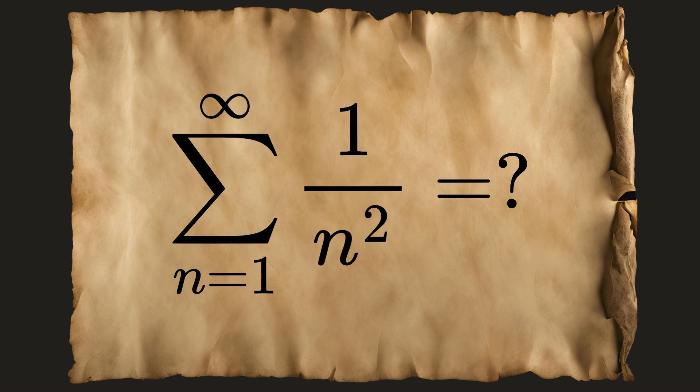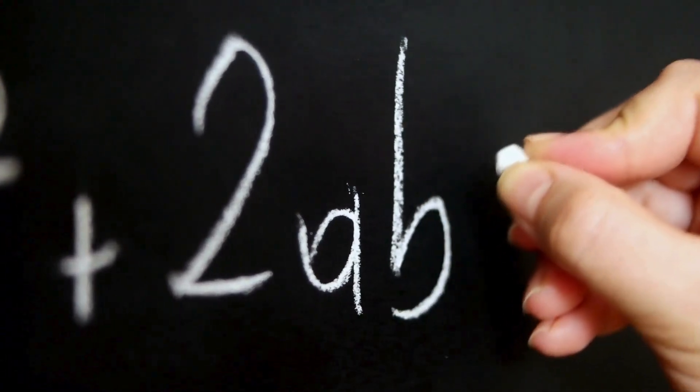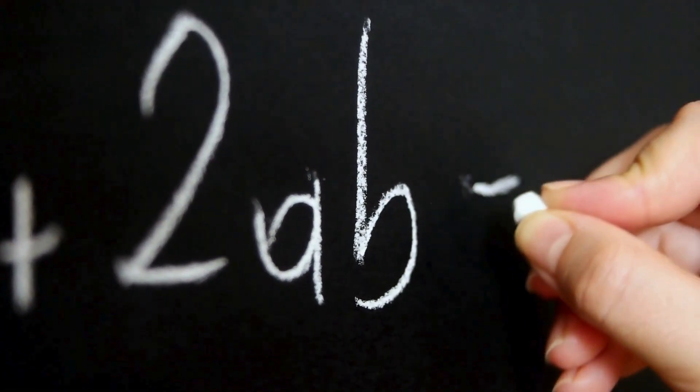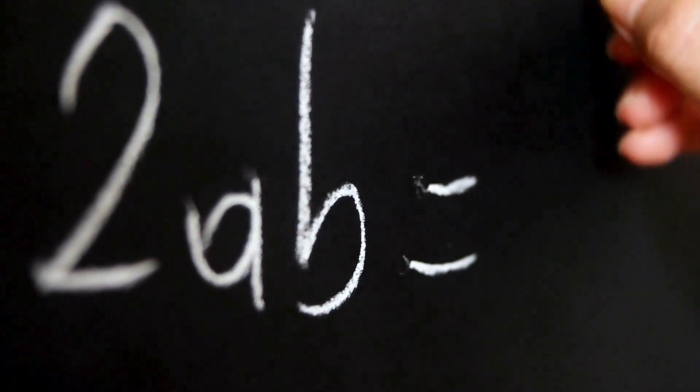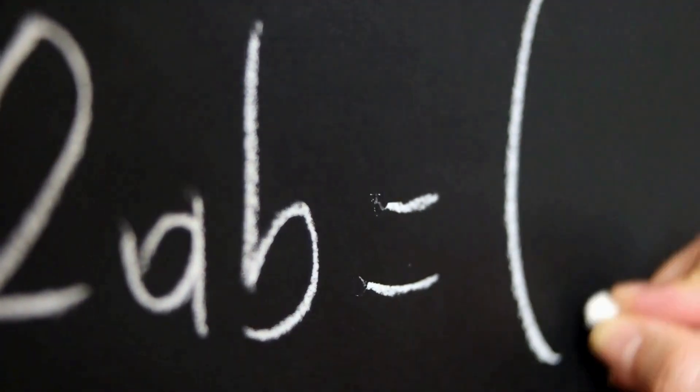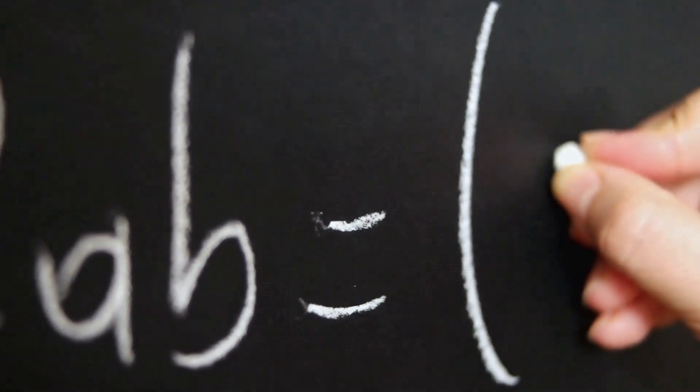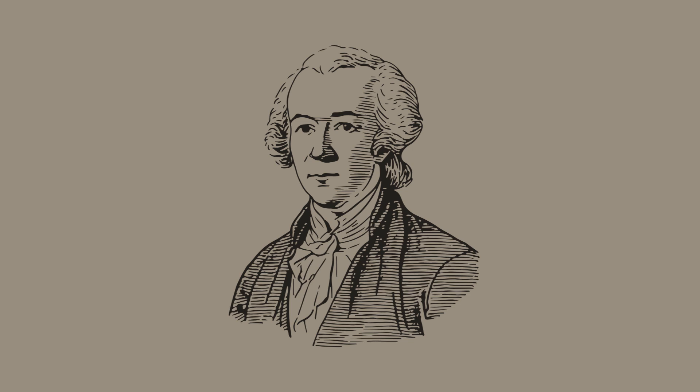Despite its simple appearance, this problem proved to be incredibly difficult to solve. For decades, mathematicians attempted various approaches, but it wasn't until the 18th century that a brilliant Swiss mathematician named Leonard Euler finally cracked the code.